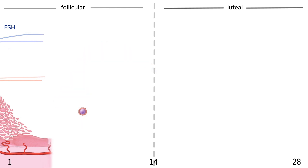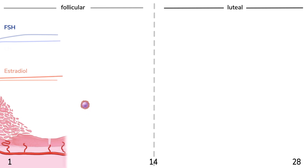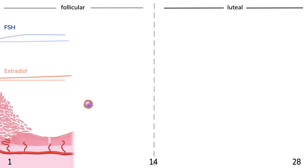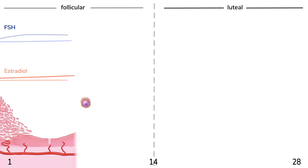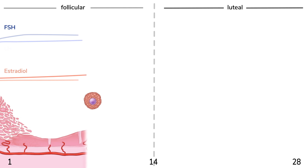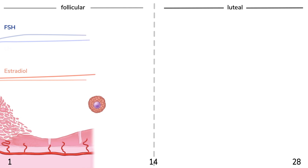As the follicles develop, they release estradiol. Estradiol causes a positive feedback effect on the follicles themselves, and also causes the uterine lining to proliferate and get thicker. This growth of the endometrial lining is in anticipation of implantation of a fertilized ovum.